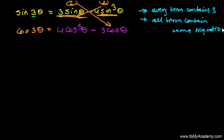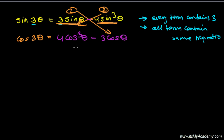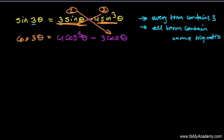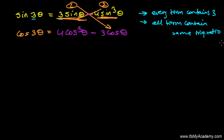This is a very simple trick to remember. Keep in mind that each and every term contains 3. Cosine 3 theta equals 4 cos cube theta minus 3 cos theta. Here is 3, here is also 3, here is also 3 — every time you're getting 3.